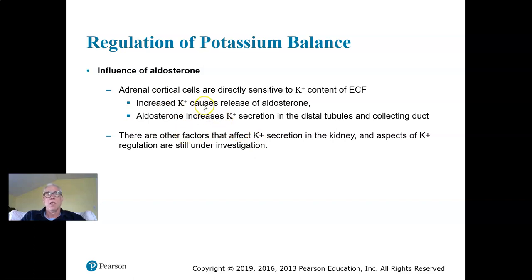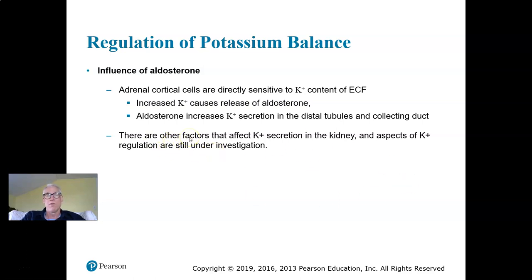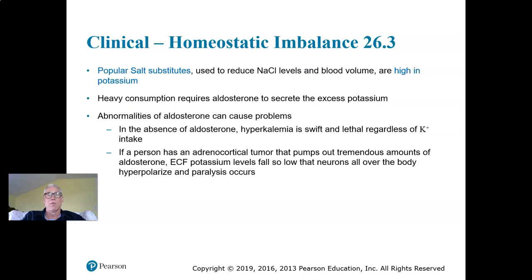Aldosterone promotes secretion of potassium in the distal tubule and collecting ducts. If potassium levels go up, the adrenal cortex releases aldosterone, which causes potassium to be secreted into the forming urine and excreted. This is a very critical function of aldosterone, and people without aldosterone potentially have life-threatening hyperkalemia. The complete picture of potassium regulation in the kidney is complicated with interrelated factors, but we have a good handle on the primary mechanisms.